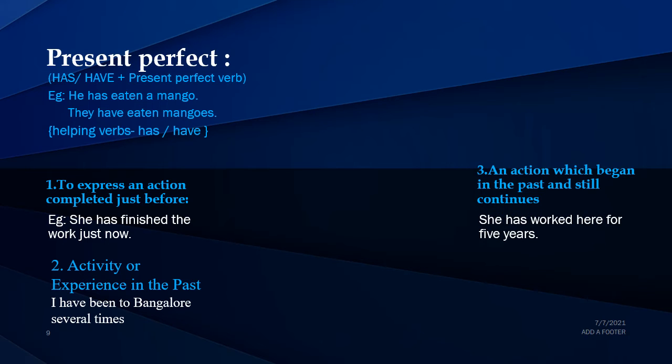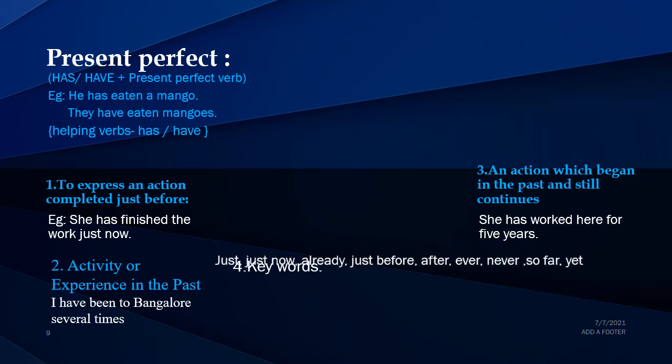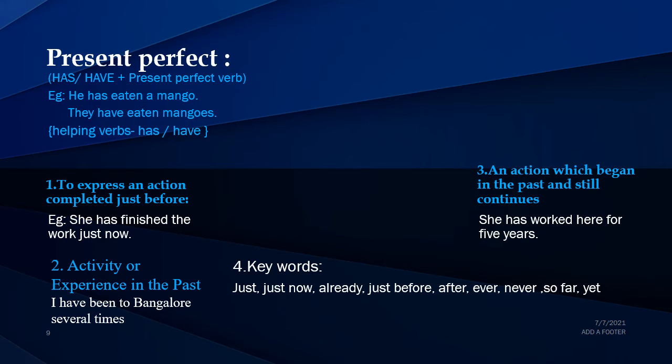'She has worked here for five years' means she has worked here and is still working. Keywords to find present perfect tense are: just, just now, already, before, after, ever, never, so far, and yet.